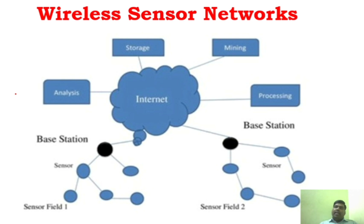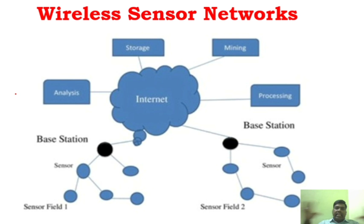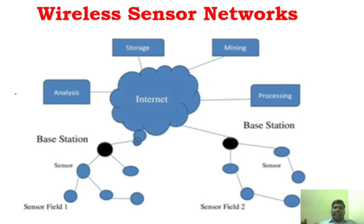One particular sensor measures the temperature. But if you are going to measure temperature in a particular room or area, you have to deploy a lot of sensors. Those hundreds or thousands of sensors can form a network — that is called a wireless sensor network. The sensors can be of any number, hundreds or thousands, deployed according to the application.